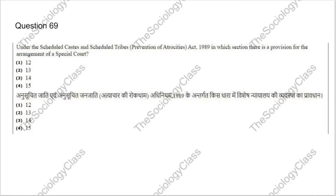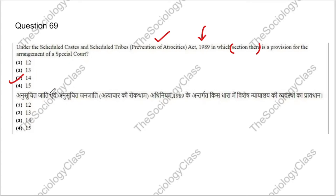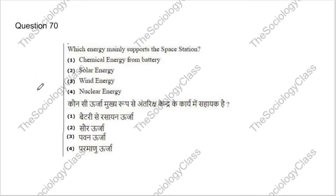Question 69: Under the Scheduled Castes and Scheduled Tribes Prevention of Atrocities Act 1989, in which section is there a provision for the arrangement of a special court? Options: Section 12, 13, 14, or 15. The correct answer is C — Section 14. Constitutional and legal questions are very important.